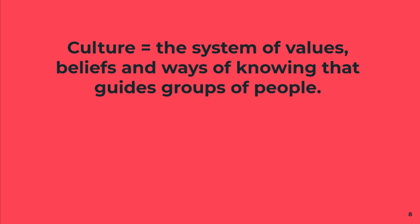So broadly put, culture is a system of values, beliefs, and ways of knowing that guides the decisions, thinking, and behavior of groups of people. Culture intersects with social categories such as race, SES, gender, and many others. In terms of education, culture is reflected in who attends schooling and who does not, in the curriculum, in who the teachers are, and in the way school is funded. We are a pluralistic democratic society comprised of many groups with differing values and beliefs. However, one culture is dominant, and the dominant culture shapes the larger society, including and especially its education system.